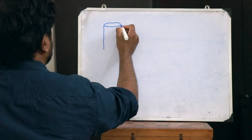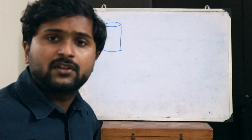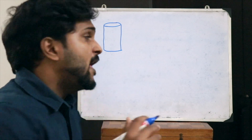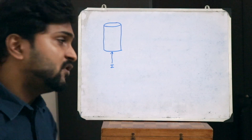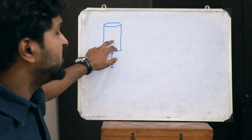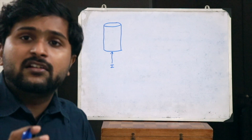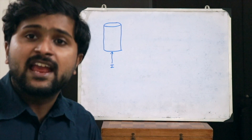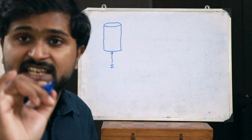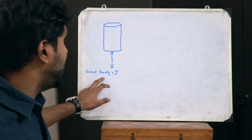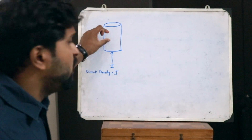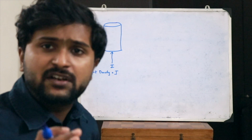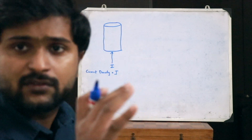First, let us consider a particular conductor. Let a particular current I be flowing through this conductor. Now if current I is flowing through this conductor, let the current per unit volume — that is the current density — be represented as J. For observation purposes, let us consider a small differential volume of this particular conductor.